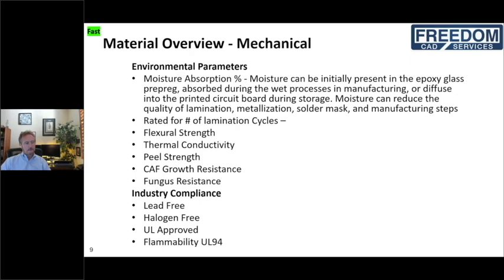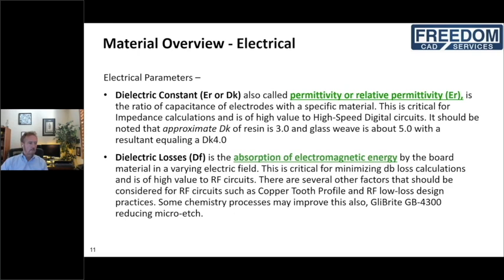The key electrical parameters are the dielectric constant and dielectric loss. The dielectric constant — Er, Dk, or permittivity — describes how well electrical energy fields pass through a material. Air has a Dk of 1 as the base point. FR4 is called FR4 because it has a dielectric constant of approximately 4: the resin is approximately 3 and the fiberglass weave is approximately 5, giving a resultant of around 4.